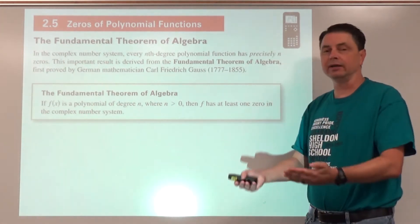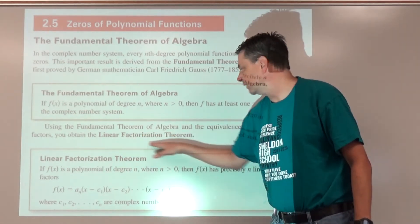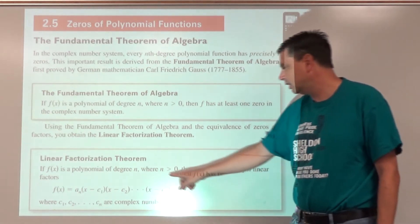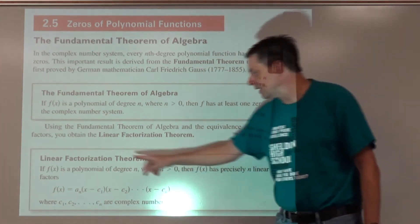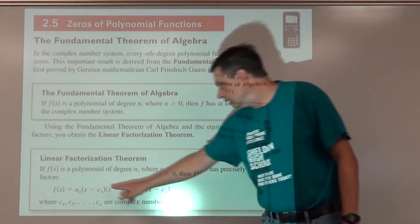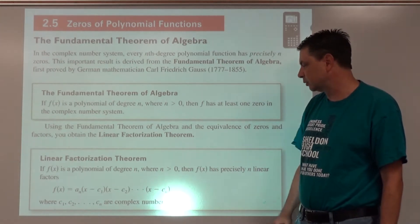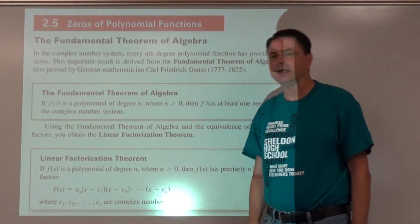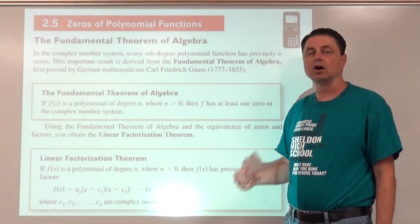We can go beyond that, and that leads us to the linear factorization theorem: if we've got a polynomial function of degree n, where n is greater than zero, then f of x has precisely n linear factors — it can be broken up into its linear factors where these are complex numbers. They might be real numbers or integers, but they're guaranteed to be somewhere in the complex number system, which means a polynomial of degree n has n complex zeros.